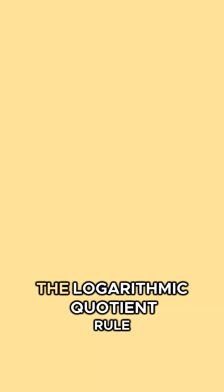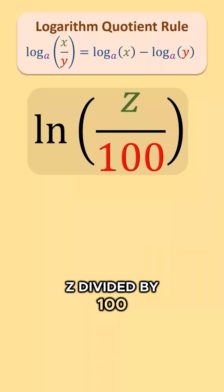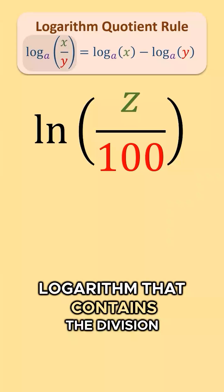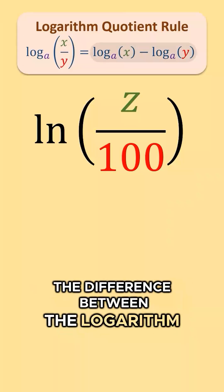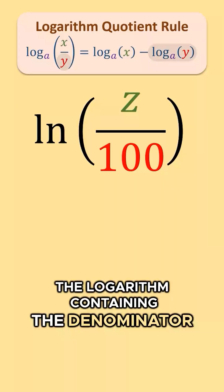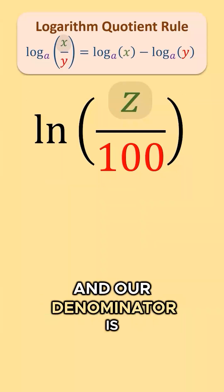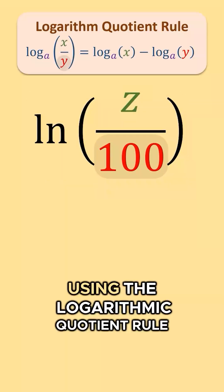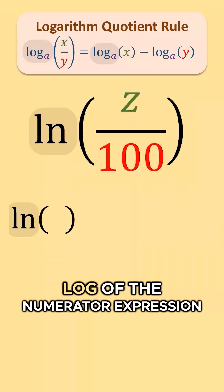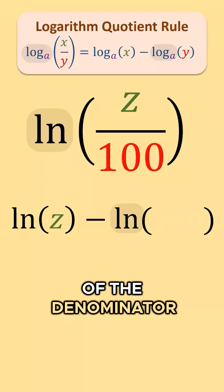Next, a quick example using the logarithmic quotient rule. Consider natural log of z divided by 100. The logarithmic quotient rule allows us to rewrite a single logarithm that contains the division of two expressions as the difference between the logarithm containing the numerator expression minus the logarithm containing the denominator expression. The expression in our numerator is z and the expression in our denominator is 100, so we can rewrite natural log of z divided by 100 as natural log of z minus natural log of 100.